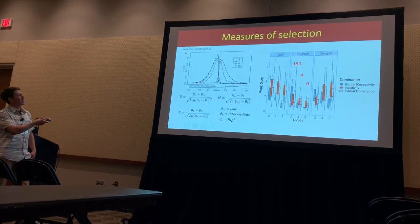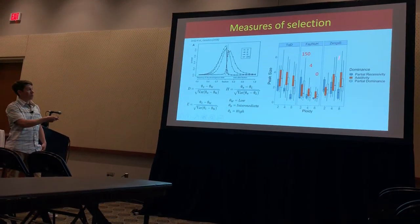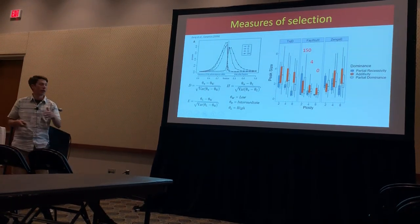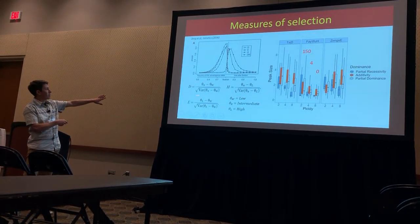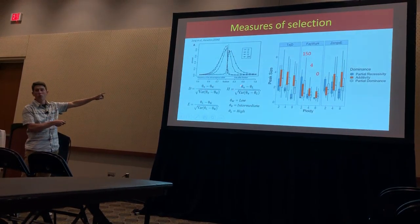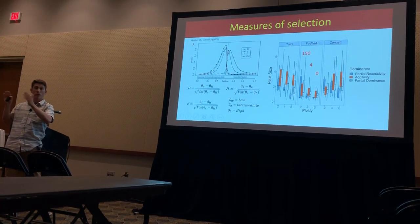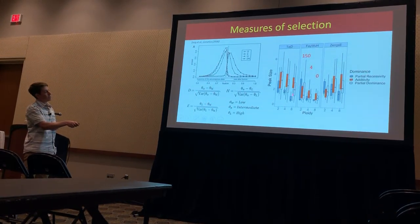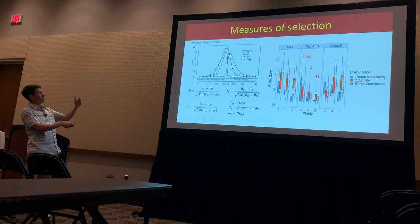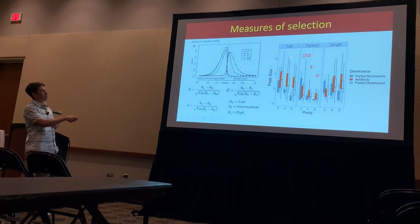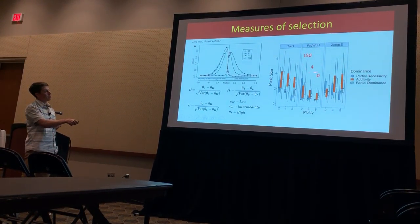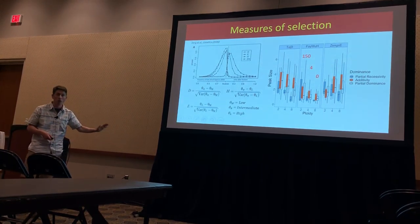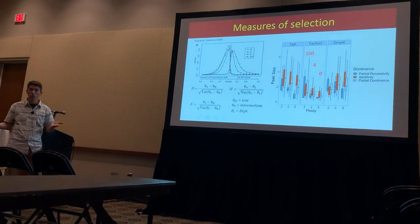There is actually a marginal effect that emerges when you look at the number of replicates where you can't actually calculate Tajima's D because both quantities go to zero — these become undefined. Diploids have a much higher chance for these metrics to become undefined because they simply crash out all of the diversity due to that really fast sweep.